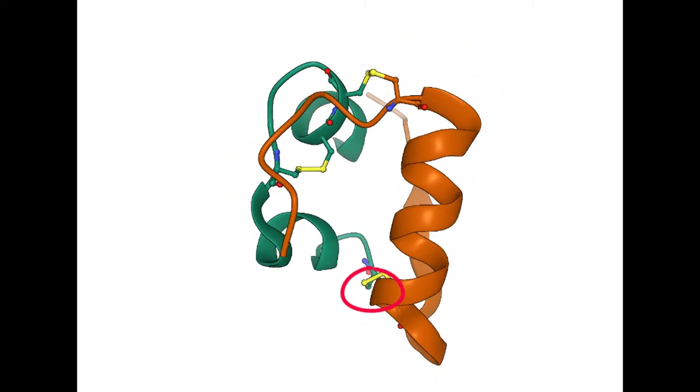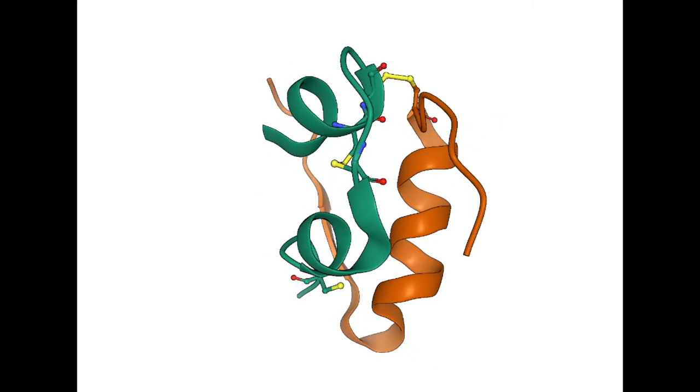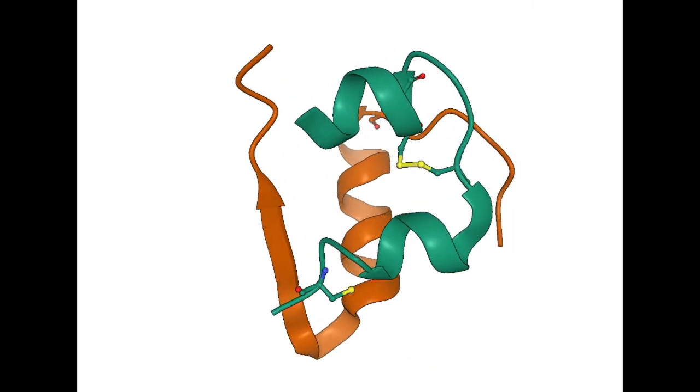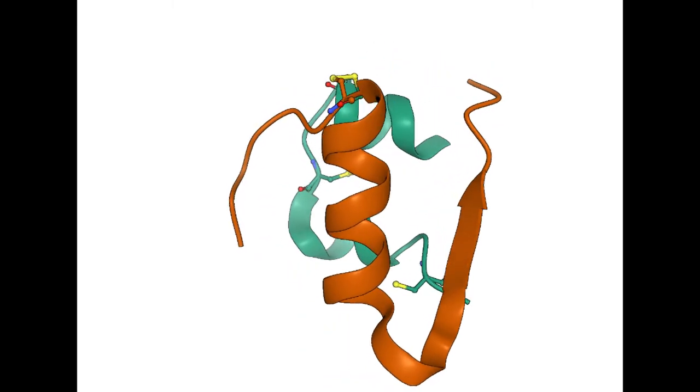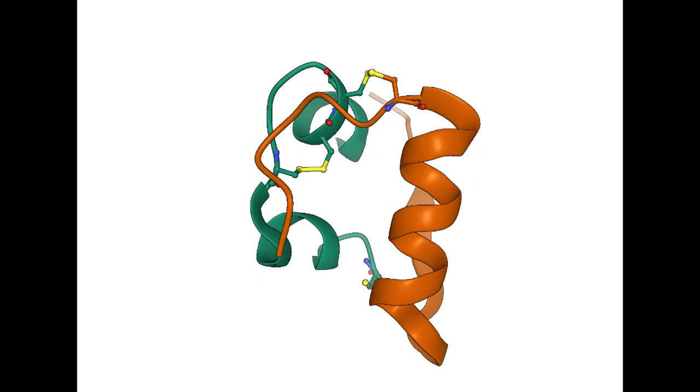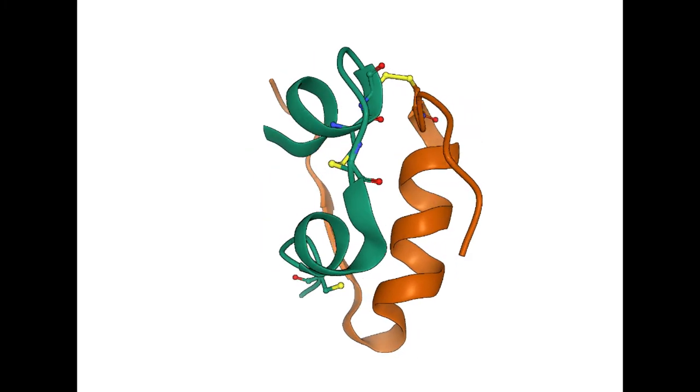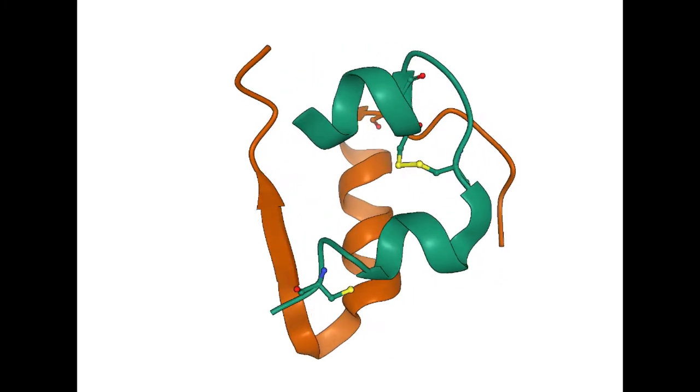Imagine one of the cysteines is mutated to glycine. What do you think would happen? The glycine side chain cannot form a disulfide bond, so this mutant protein is less stable and non-functional, leading to a form of diabetes in the newborn.